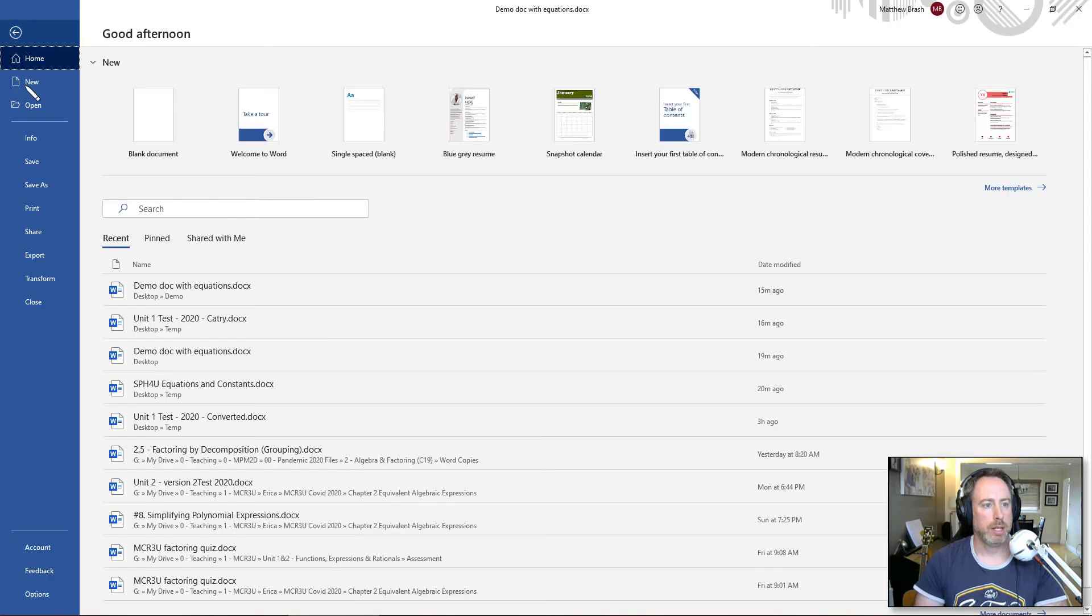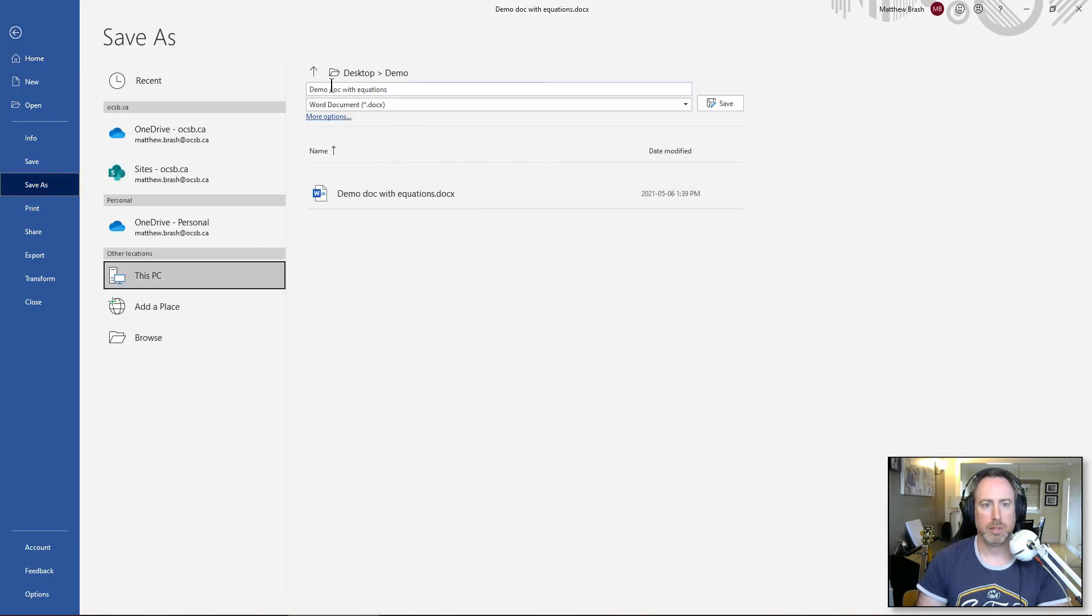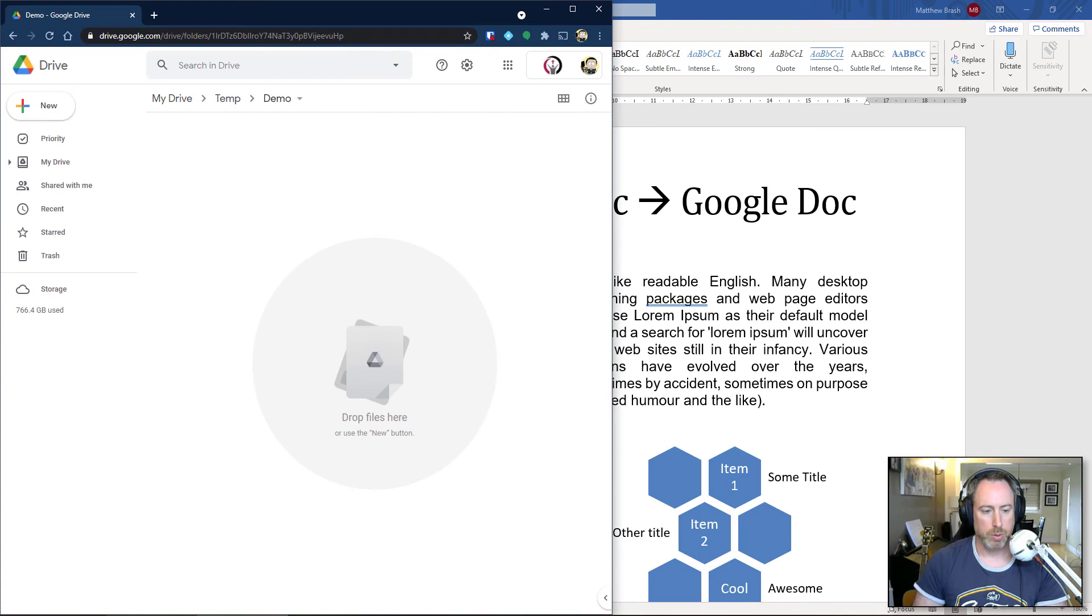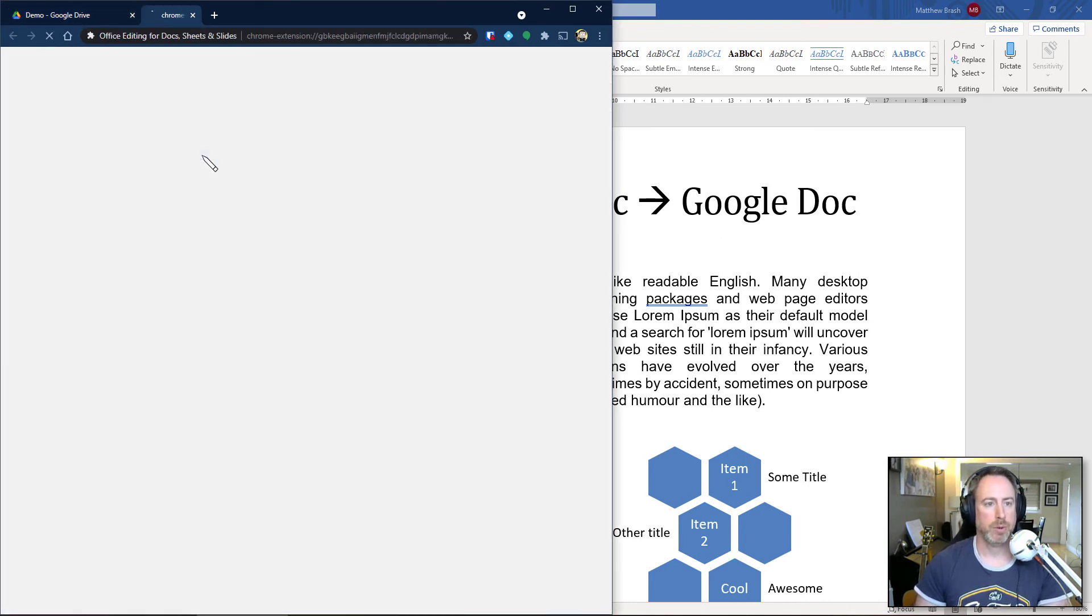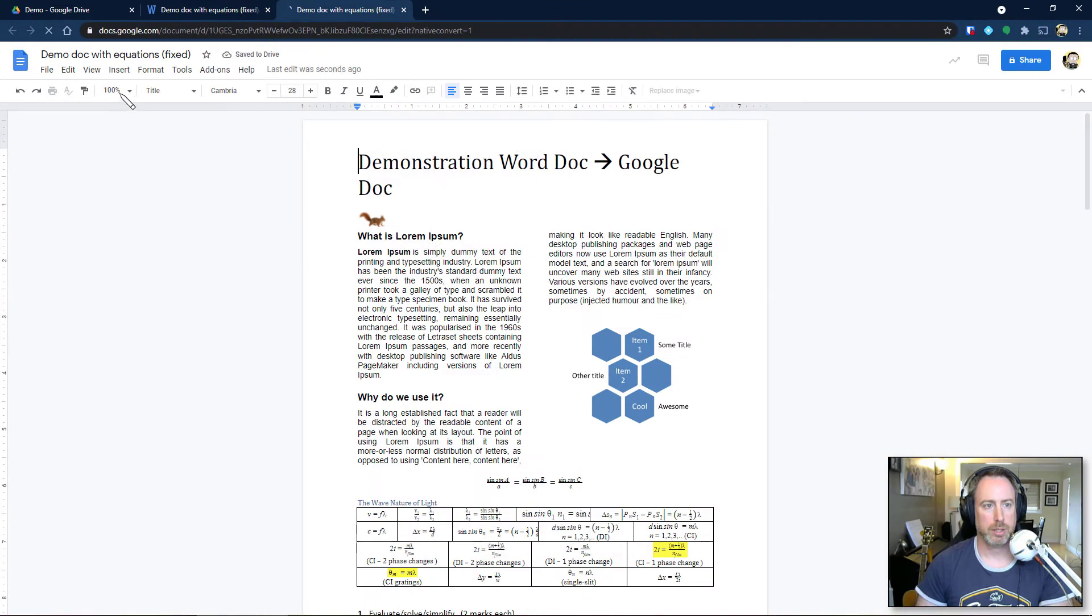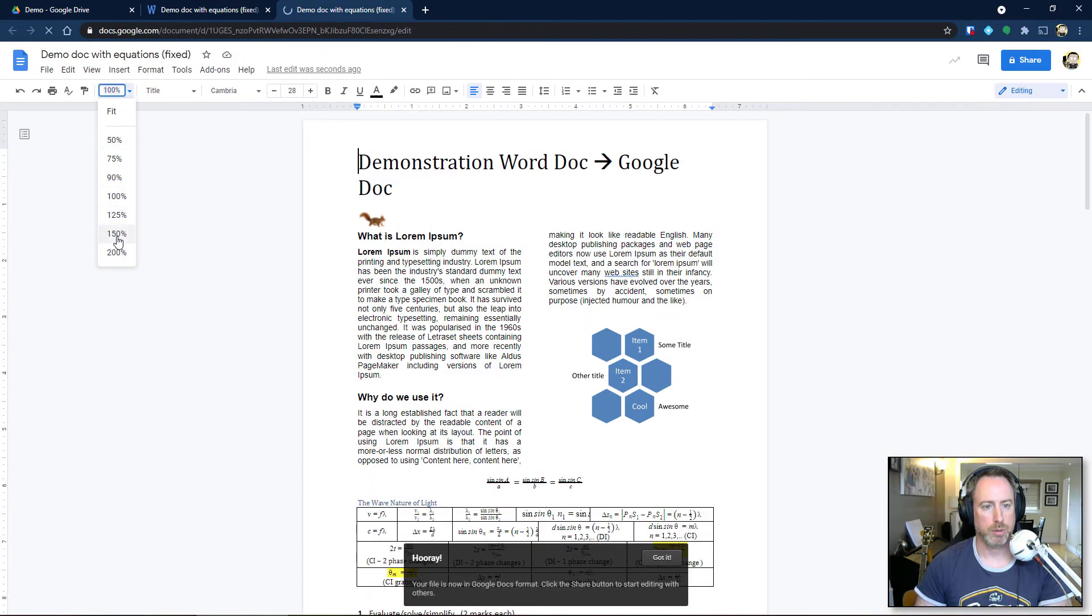So let's save this now. I will save as demo doc with equations fixed. So that's saved. Let's throw that into my Google drive. So I'll just drag that in. Let's convert that to a Google doc and let's take a look. Let's go to 150% zoom.